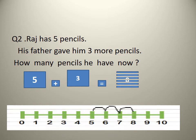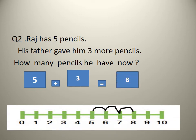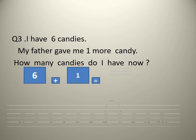Raj has 5 pencils. His father gave him 3 more pencils. How many pencils does he have now? So Raj has 5 pencils, so number 5 will come here. Plus 3. Father gave 3. Equal to how many total? So 5 plus 3. How many jumps? 3 jumps. 1 jump, 2 jump, and 3 jumps. So it is 8. Answer is 8.